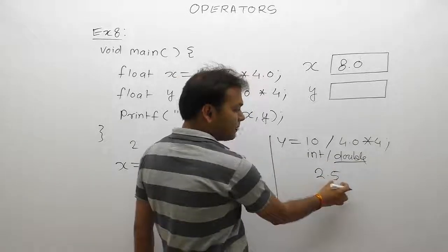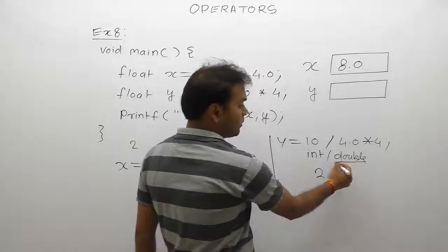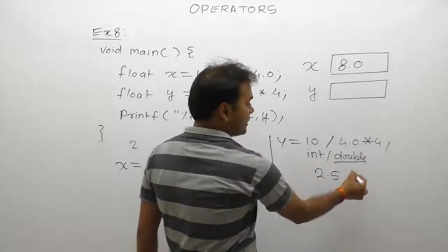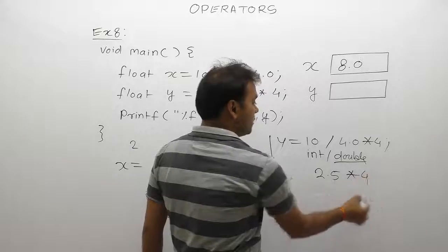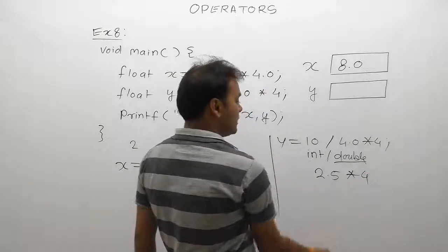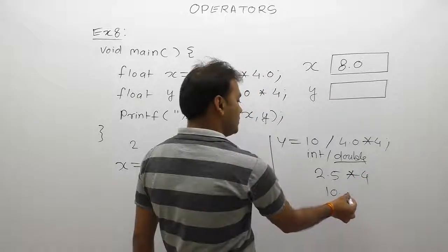Then multiply by 4. 2.5 multiply by 4, result is 10.0. This result is also double. This final result is assigned to variable y.